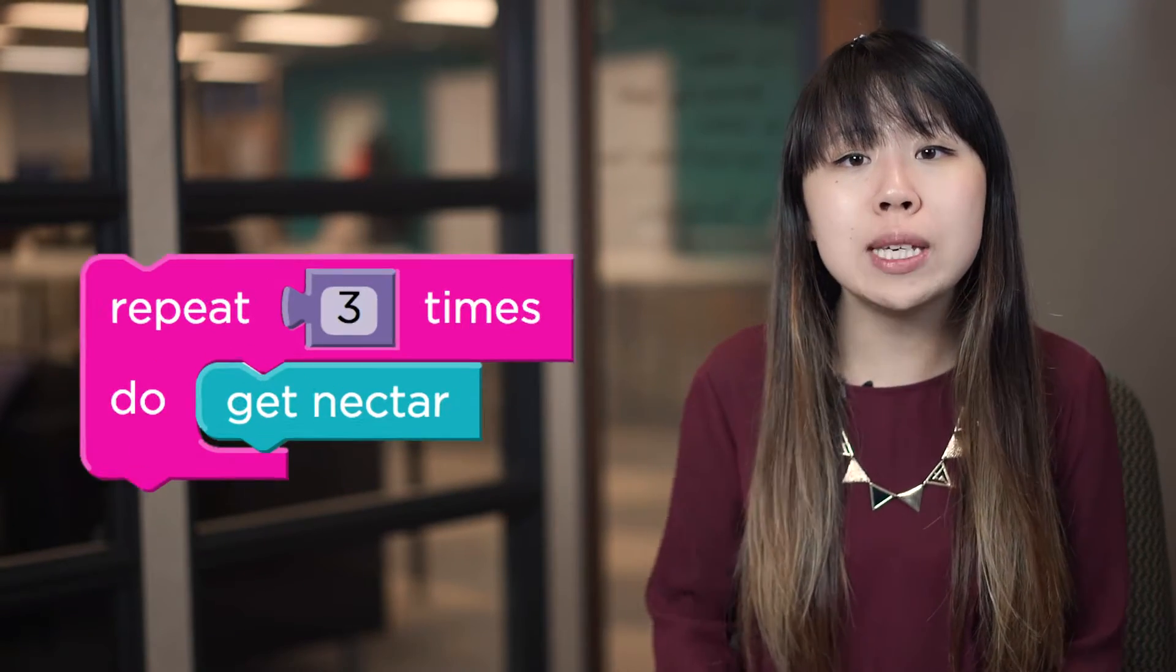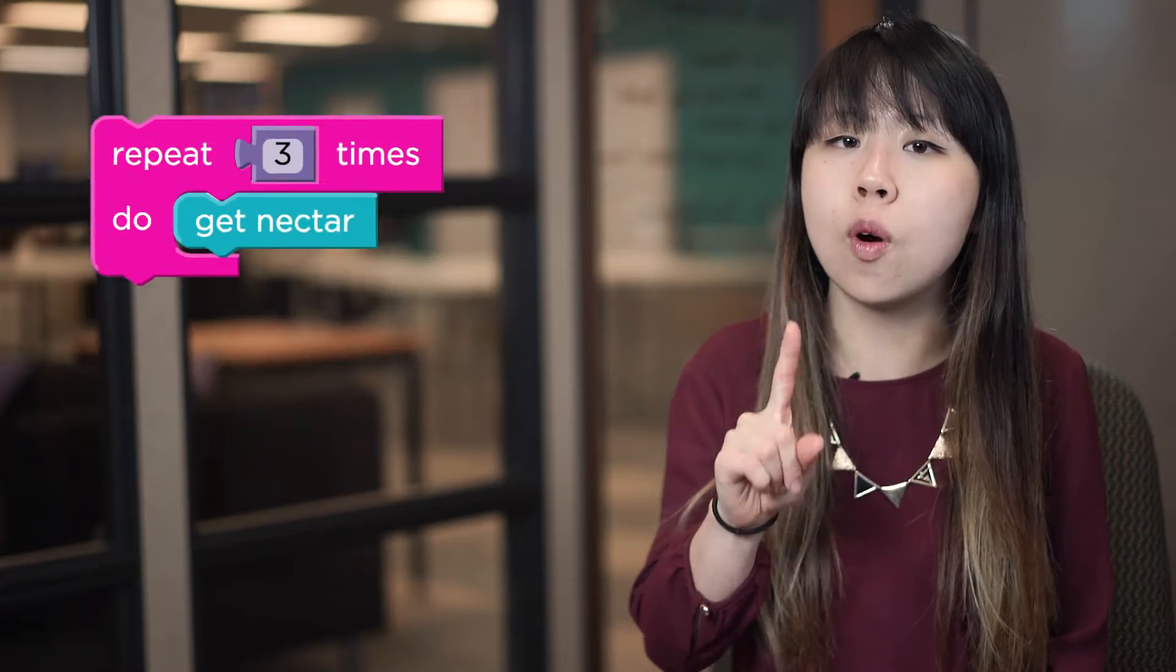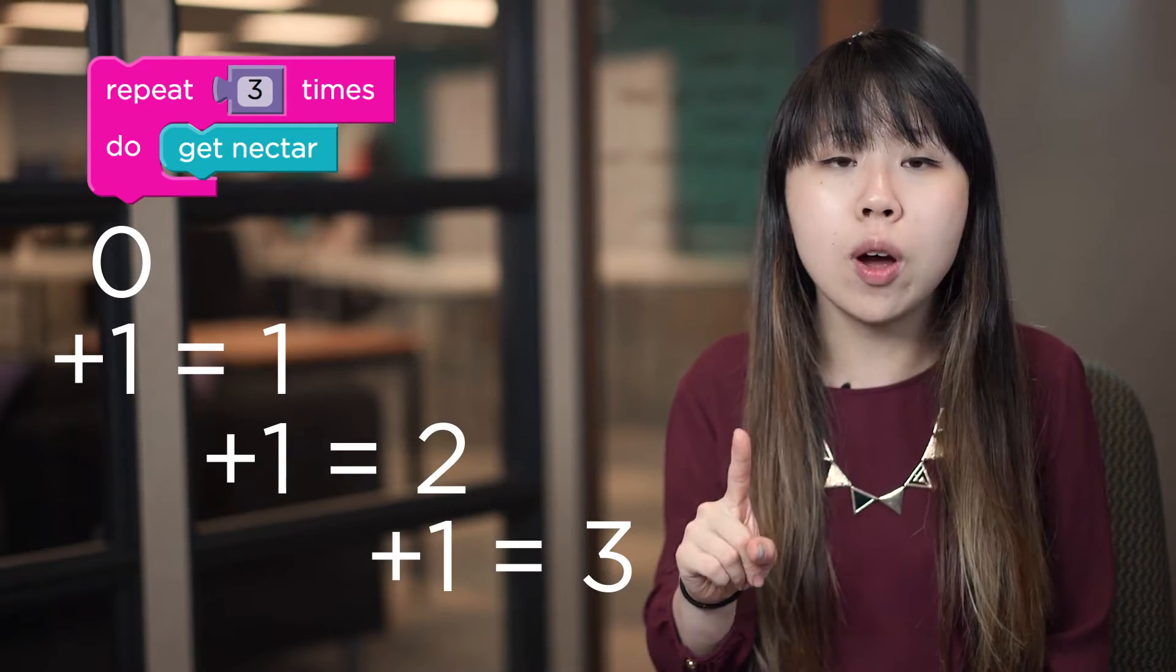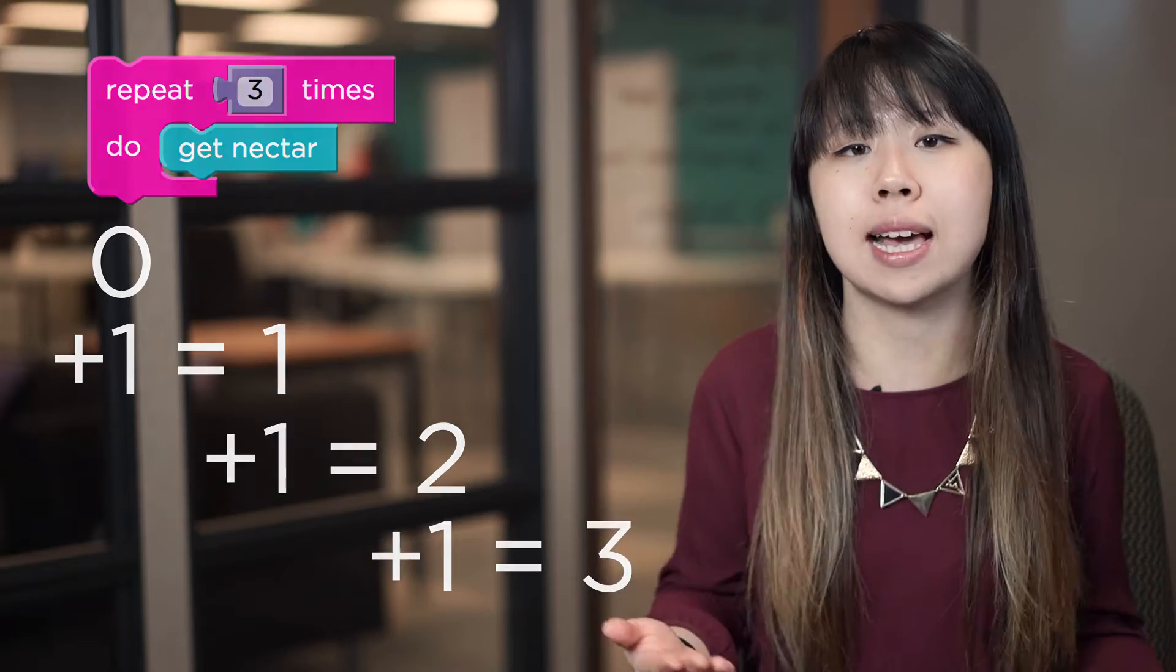So for example, a repeat 3 block counts from 1 to 3 by 1, and every time it counts, it runs the code inside the loop.